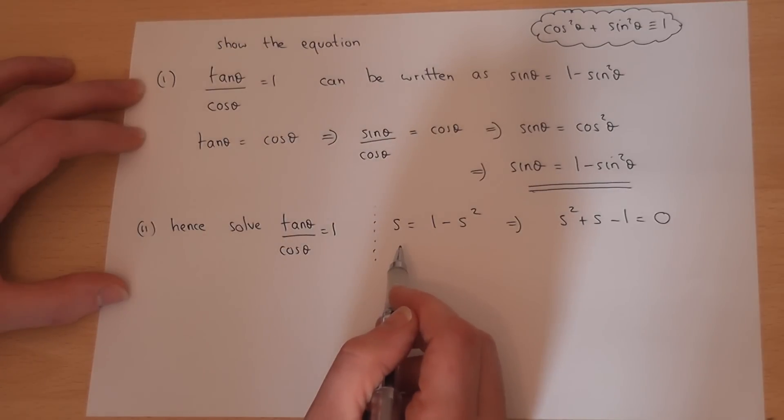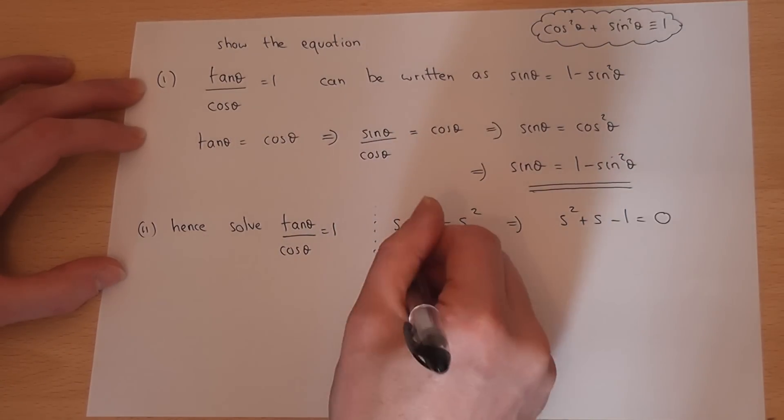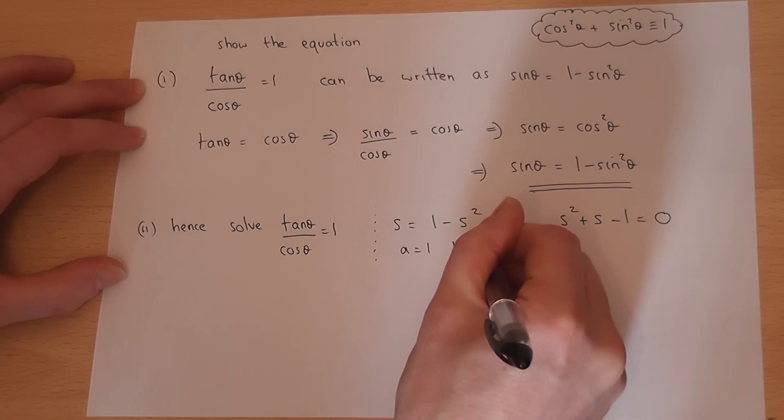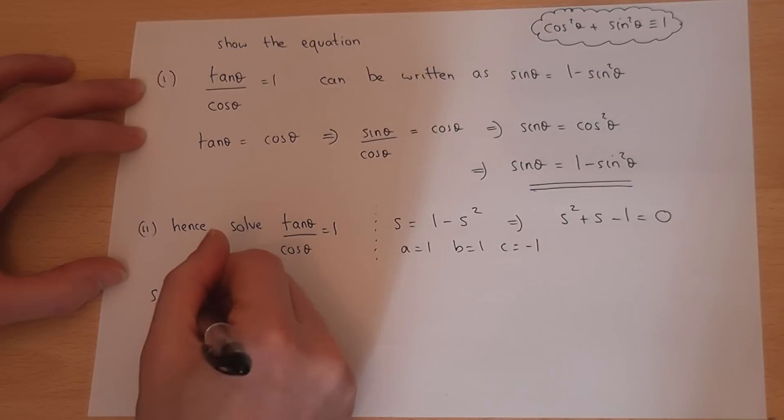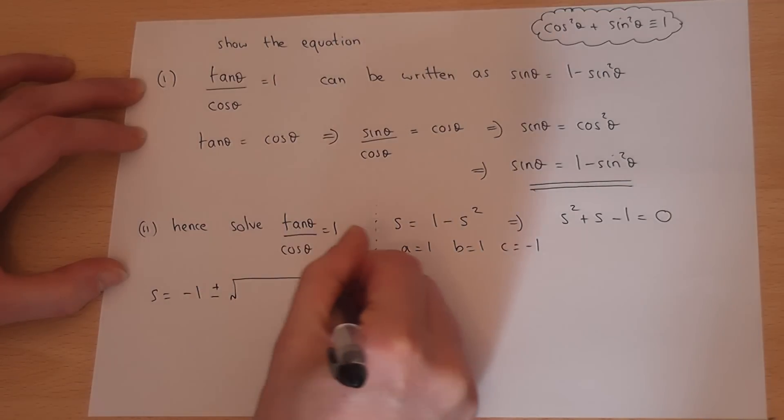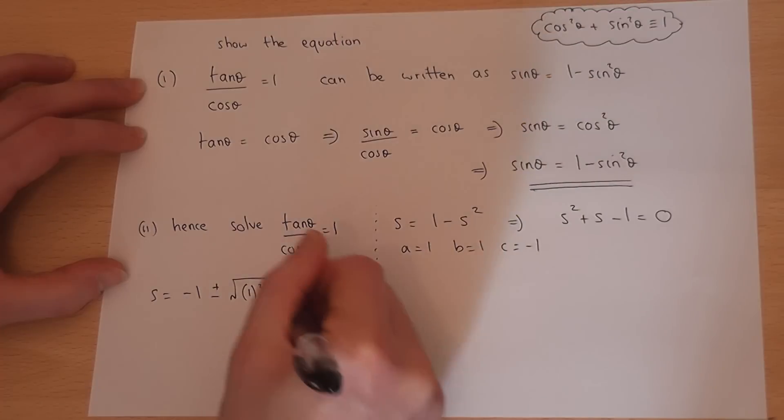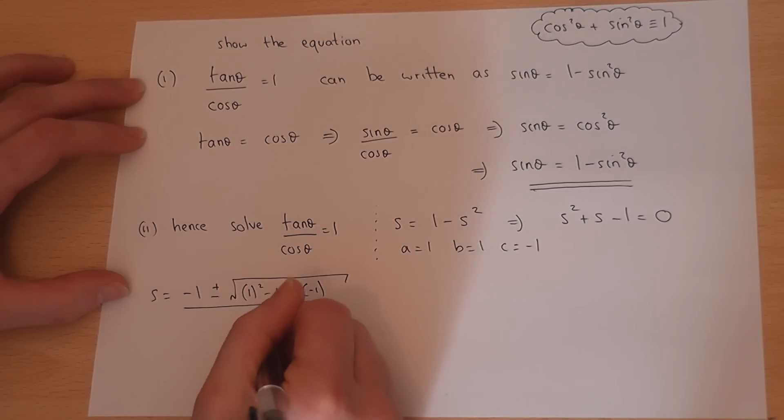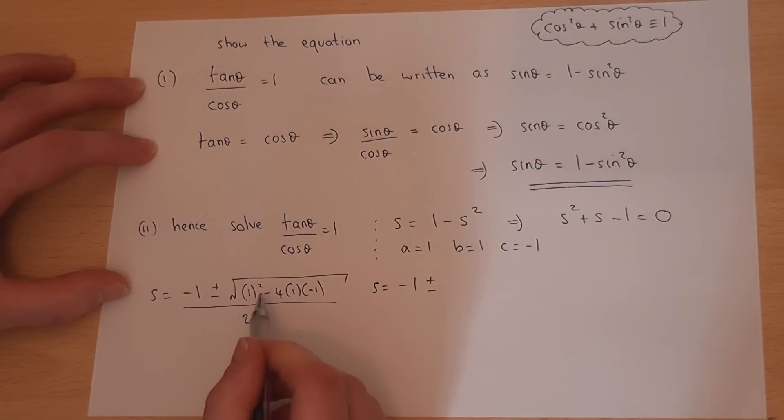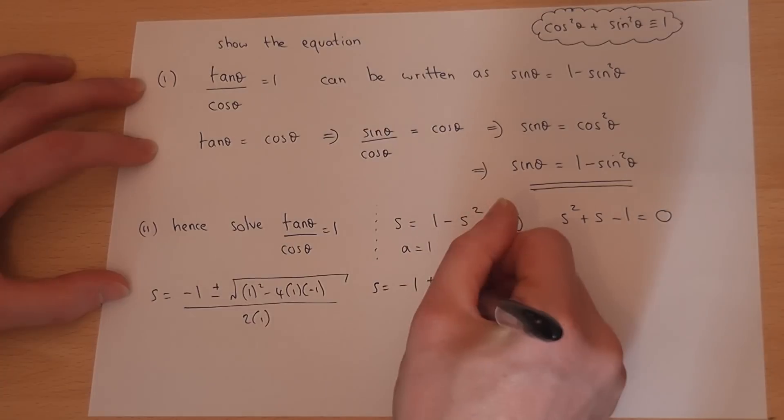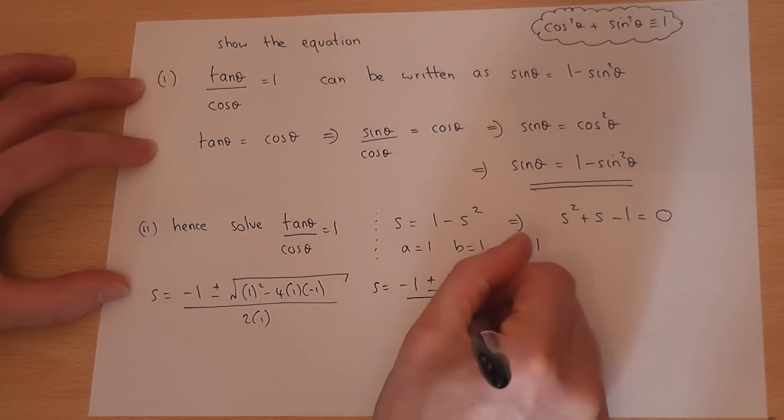Now this does not factorise, so I will have to use the quadratic formula. So a equals 1, b equals 1, and c equals minus 1. So s will equal minus b plus or minus the square root of b squared minus 4 times a times c. Minus 4 times minus 1 is 4, so 1 plus 4 is 5. So I get root of 5 all over 2.